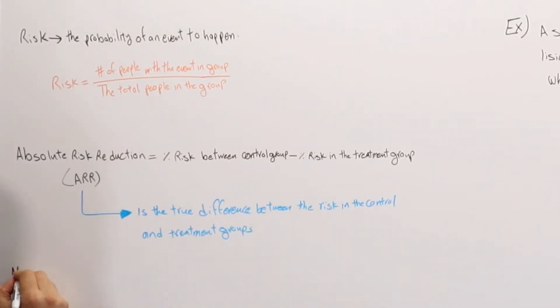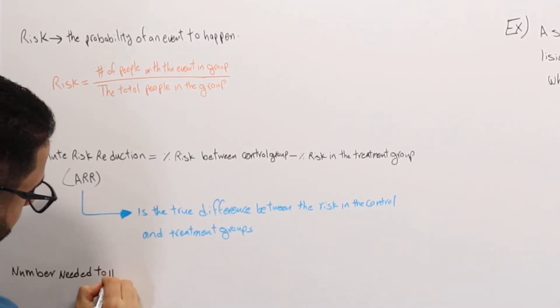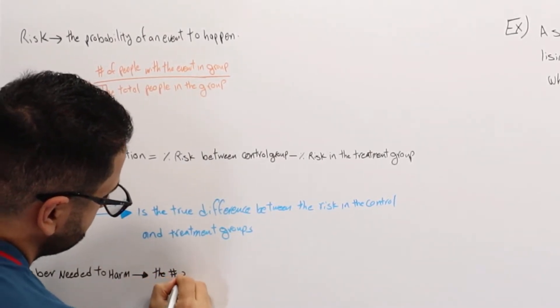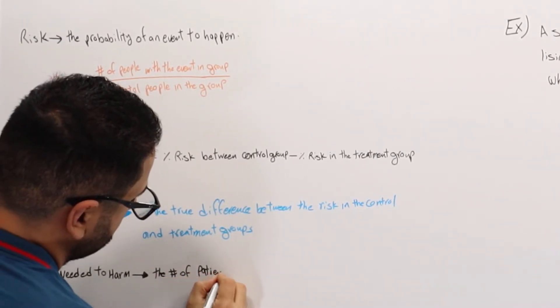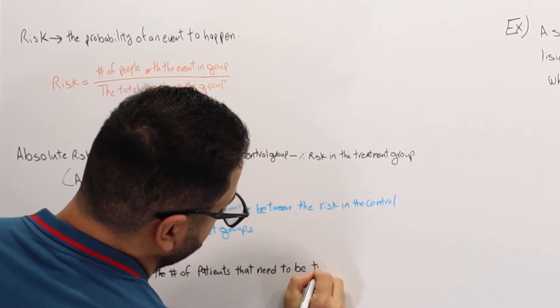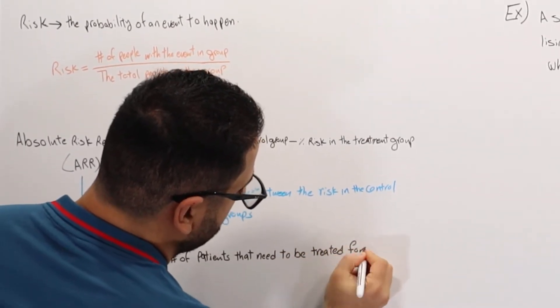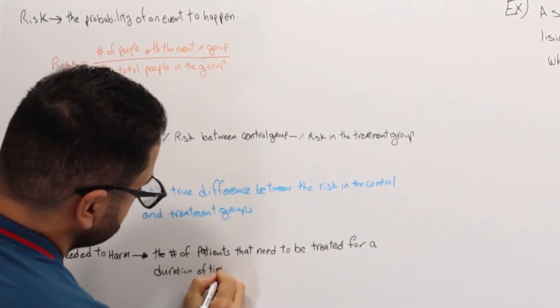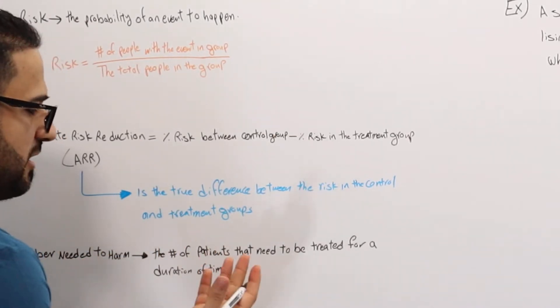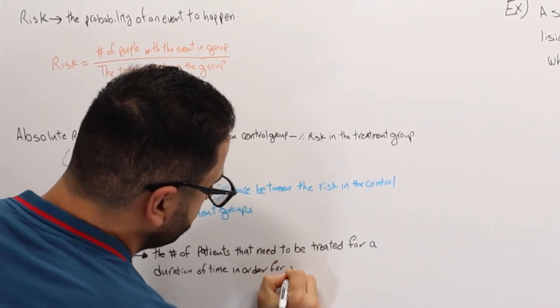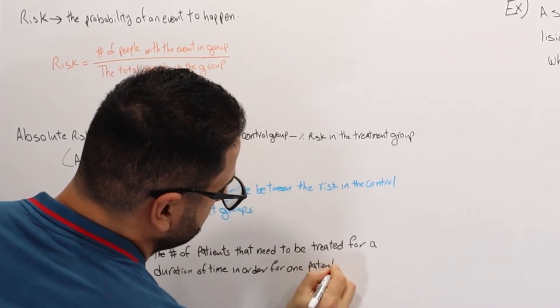Number needed to harm is the number of patients that needs to be treated for a duration of time, and this could be six months, one year, two years, five years, ten years, depending on the study, treated for a duration of time in order for one patient to be harmed.